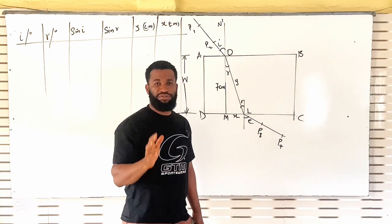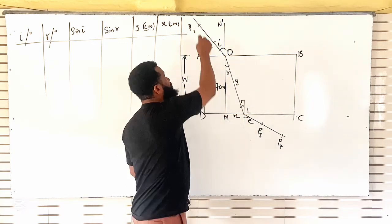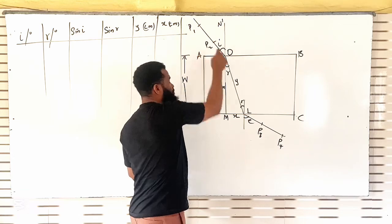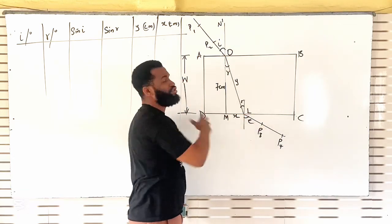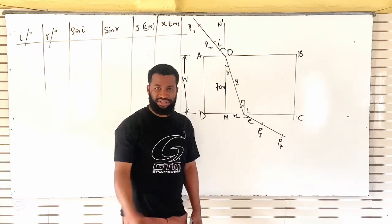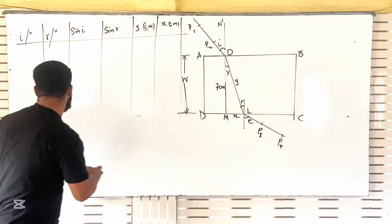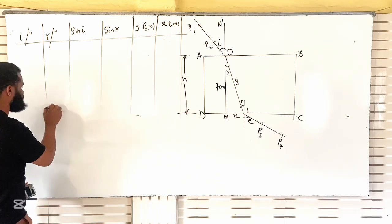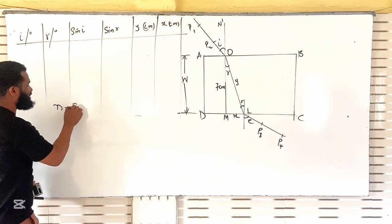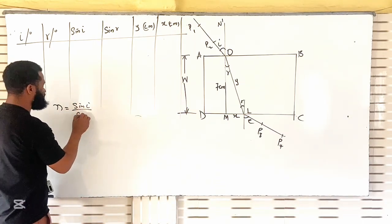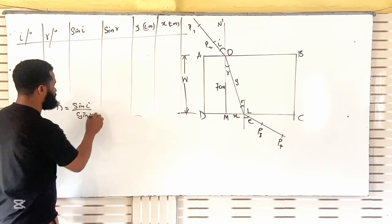After manipulating, also remember you have to draw all these things — put pin here, put pin here, put pin here, put pin here — to show that you actually did it. Let's get started. According to Snell's Law, refractive index is equal to sine of the incident angle all over sine of refraction.